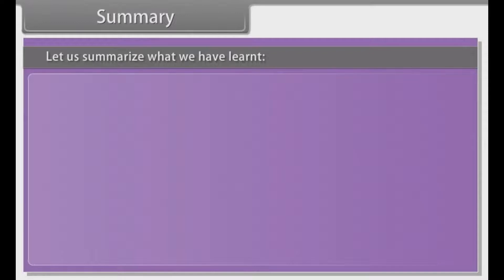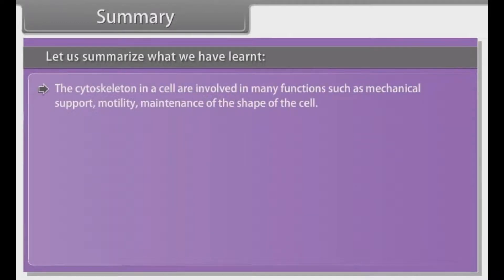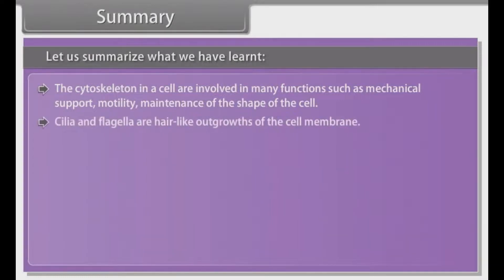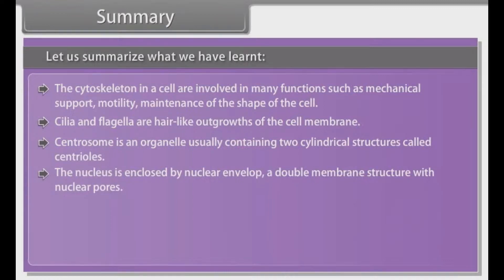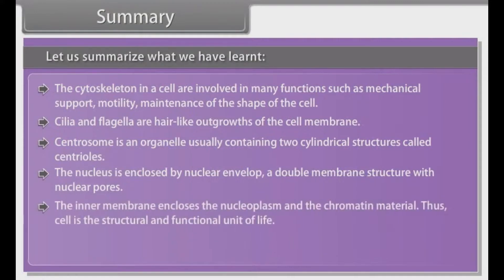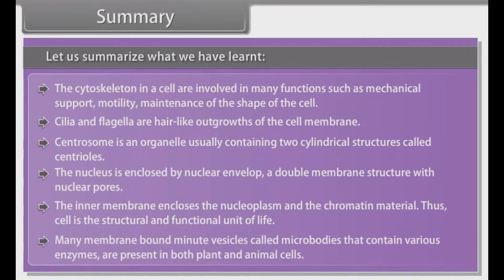Summary: Let us summarize what we have learnt. The cytoskeleton in a cell is involved in many functions such as mechanical support, motility, and maintenance of the shape of the cell. Cilia and flagella are hair-like outgrowths of the cell membrane. Centrosome is an organelle usually containing two cylindrical structures called centrioles. The nucleus is enclosed by a nuclear envelope — a double membrane structure with nuclear pores. Many membrane-bound minute vesicles called microbodies that contain various enzymes are present in both plant and animal cells.